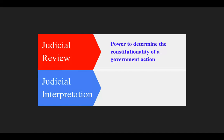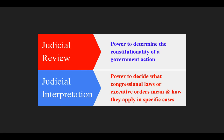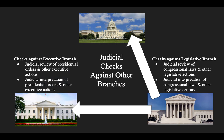Federal courts also have the power of judicial interpretation, which is the power to decide what congressional laws or executive orders mean and how they actually apply in specific cases. Judicial interpretation is also a check against the other branches of the federal government — so it's not necessarily saying that what they're doing is illegal, but it can influence how exactly those actions are taken long-term.